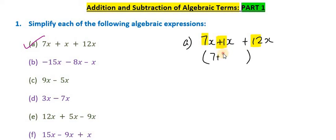So in fact what we have is the coefficients which we will basically add. So 7, this is a plus 1, this is a plus 12. So we add the coefficients. 7 plus 12 that's 19 plus 1 that is going to be 20. So that's 20x. This is our solution. 7x plus 1x plus 12x gives us 20x.